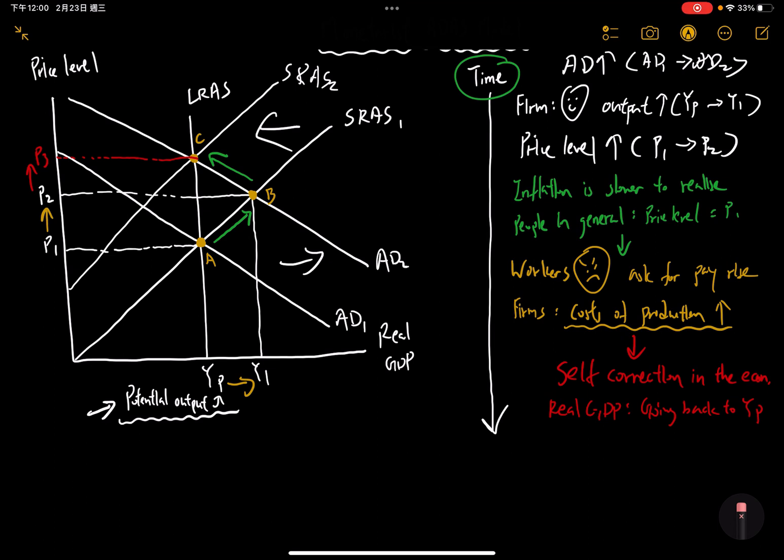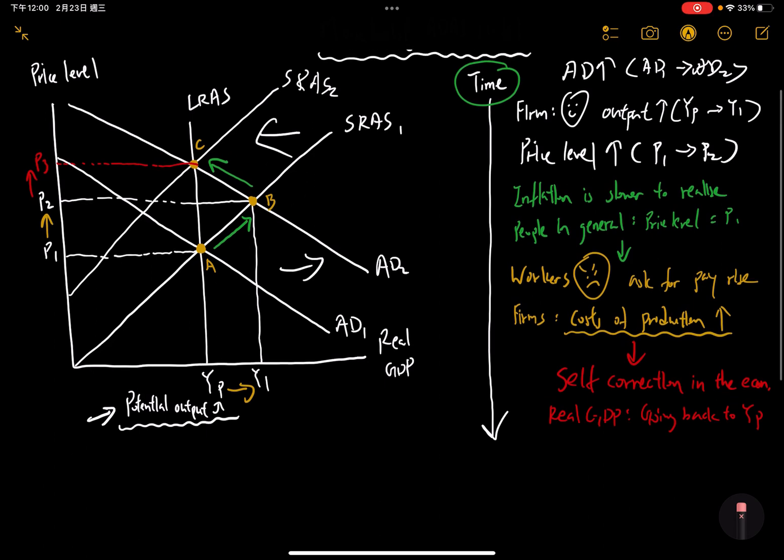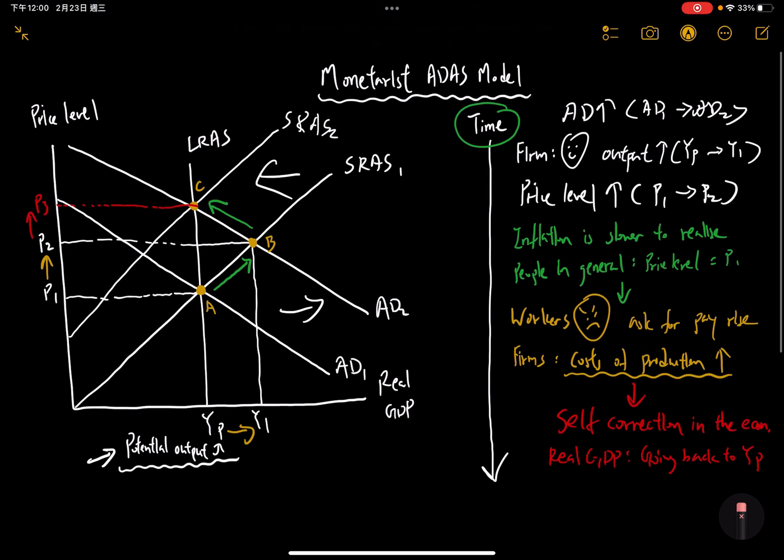And at the same time, it also fulfills what they believe about the long-run AS. Because when you think about it, long-run AS, we talk about this vertical line showing that in the long run, disregarding the level of inflation, we will always get back to that potential output. And in this very simple scenario, we get to understand this is how we can come up with the entire procedure to get this final result.